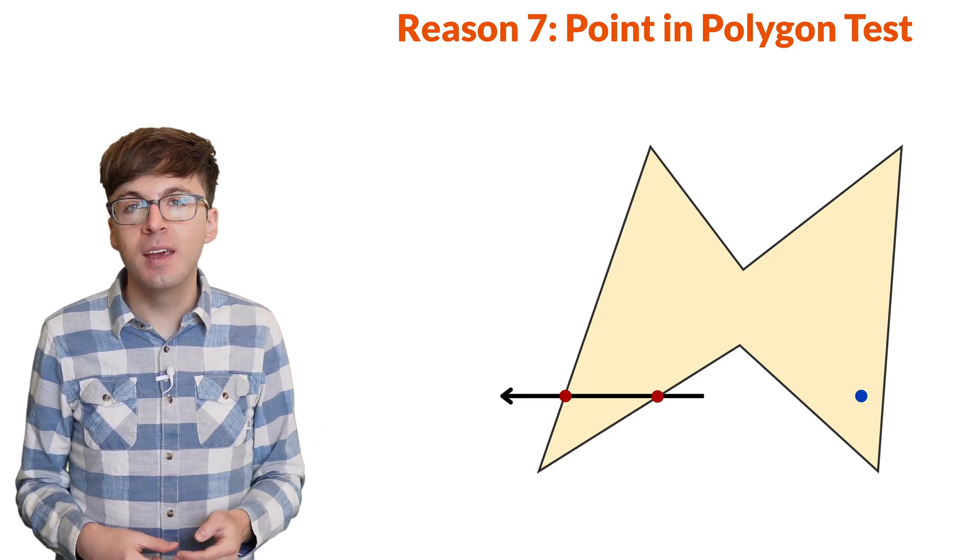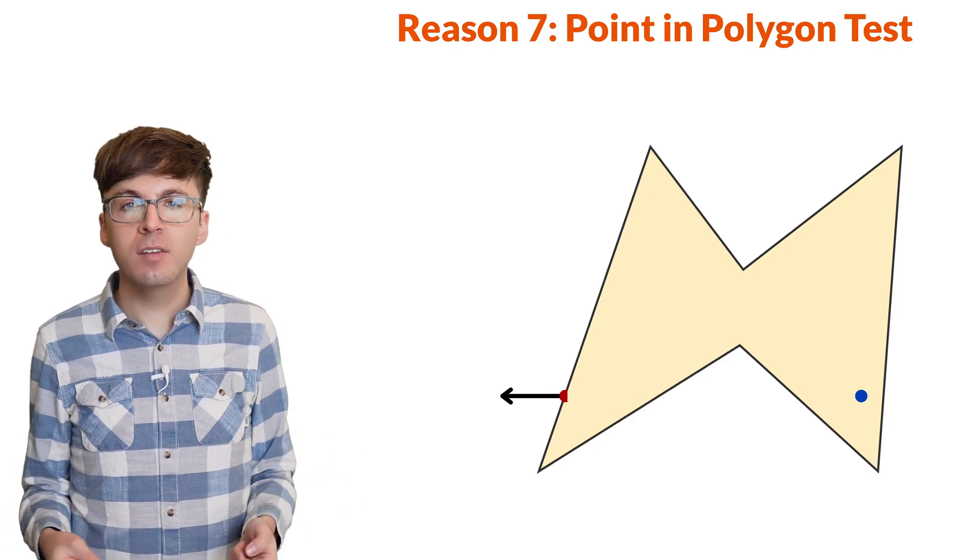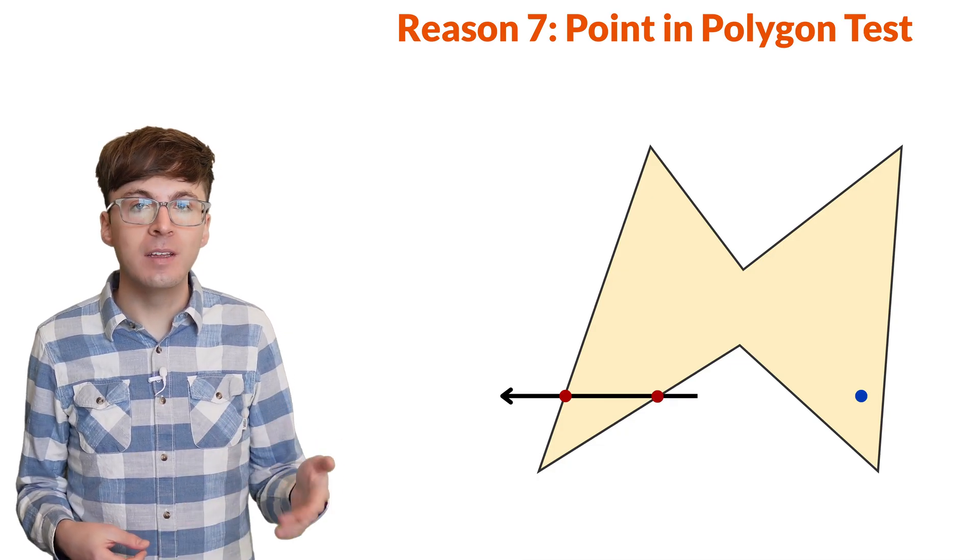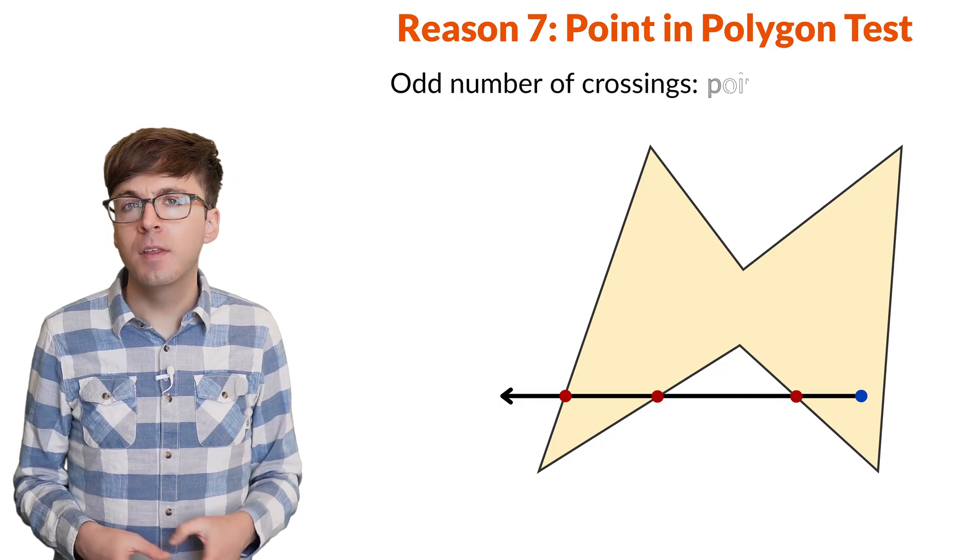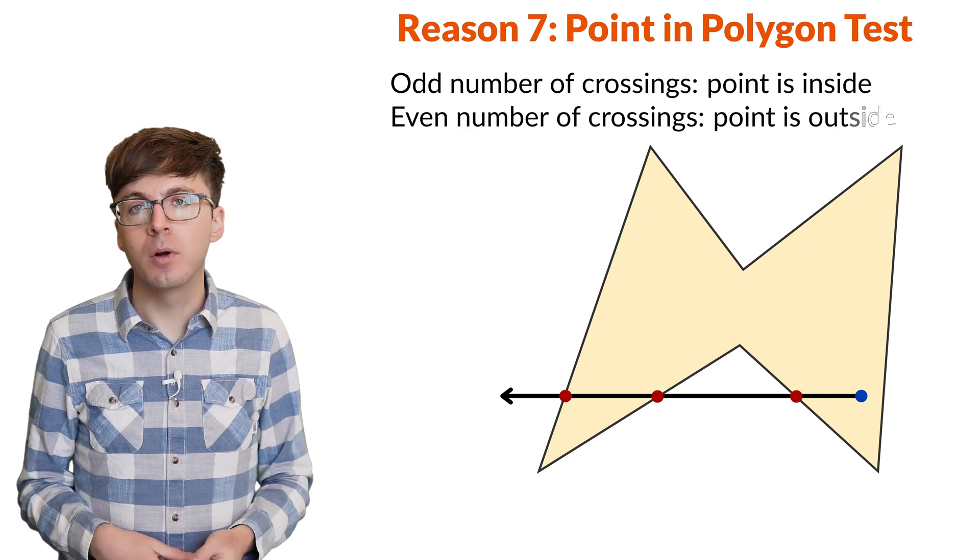We look at a ray from infinity to the point and count how many times the ray crossed the polygon. The first cross takes us from outside to inside the polygon. The second cross takes us from inside to outside. So if there were an odd number of crossings, then the point is inside the polygon. And an even number of crossings means the point is outside the polygon.